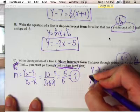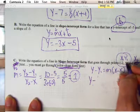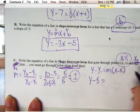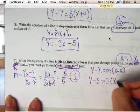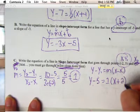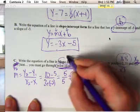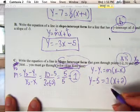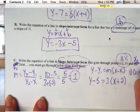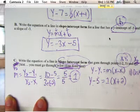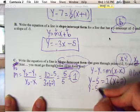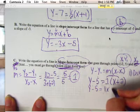So we do y minus y1, which is 5, equals your m, which is 1, parentheses x minus a negative 2 — so it's x plus 2. But then it says we have to write it in slope-intercept form. This is point-slope, so we have to transfer that equation to slope-intercept. To do that, we distribute — that's the first step. So we're going to distribute the 1 to both places: y minus 5 equals 1x plus 2.